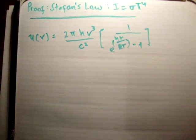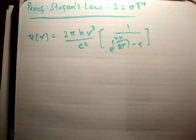In this video I'd like to show you how to prove Stefan's law, which says that the intensity of a blackbody spectrum is equal to sigma times T to the fourth, where sigma is a constant.